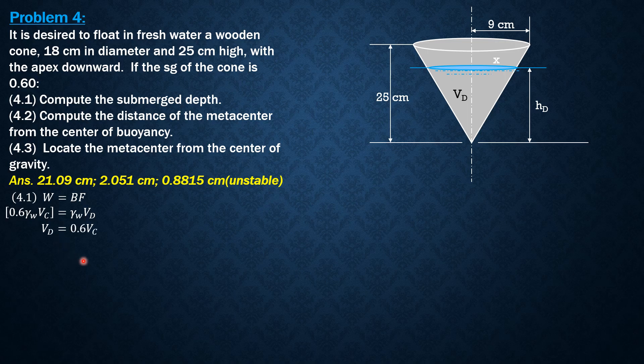Applying principles in solid geometry, we have similar solids here because this is a cone and this is the parent cone. Volume displaced as to HD cubed equals volume of cone as to height of cone cubed. The height of cone is 25 cm.